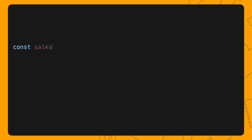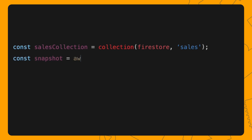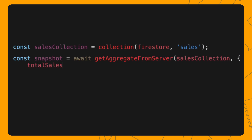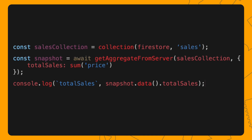First, you need to grab the collection in which these documents are stored. In this case, you want the collection that contains all the sales made in your app. Next, call getAggregateFromServer. Inside this call, you need to specify the collection and the aggregation query you want to run, which in this case is sum. When calling sum, pass a field name as a parameter. This is the document field that contains a value to be added to the total sum, which in this case is the field price. Note that you need to assign the result of this call to a variable, for example, totalSales. Once you have a snapshot, you can run snapshot.data and access the sum through the totalSales variable as you can see here.